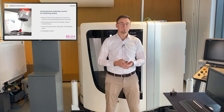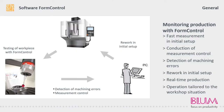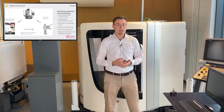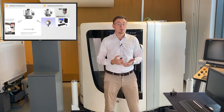The Form Control software lets you take measurements quickly in the original clamping, both during and after machining. As a result, processing errors can be detected early on and the workpiece can be reworked immediately. Our software supports three-axis machines as well as five-axis machines with simultaneous measurements.